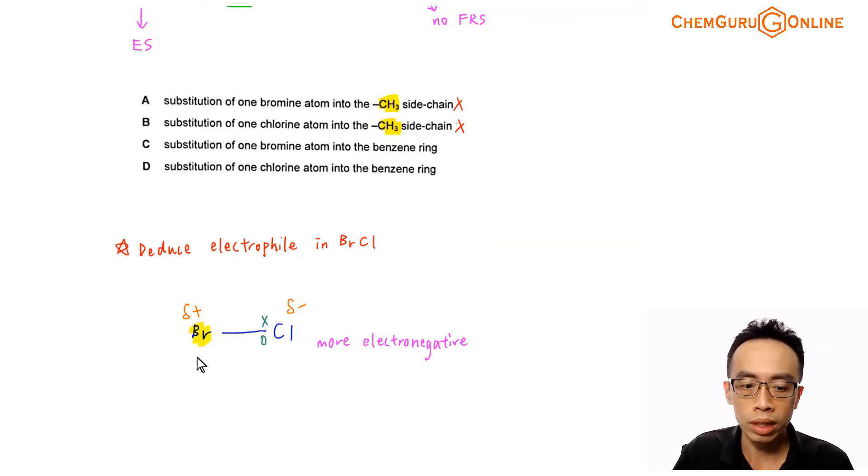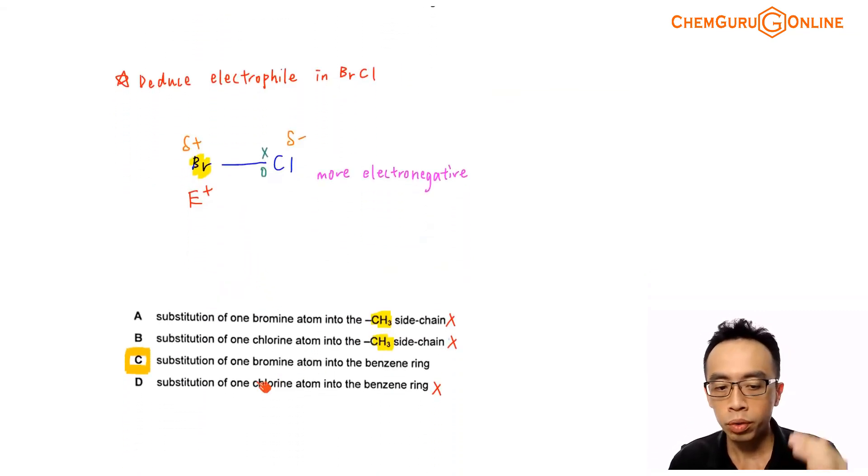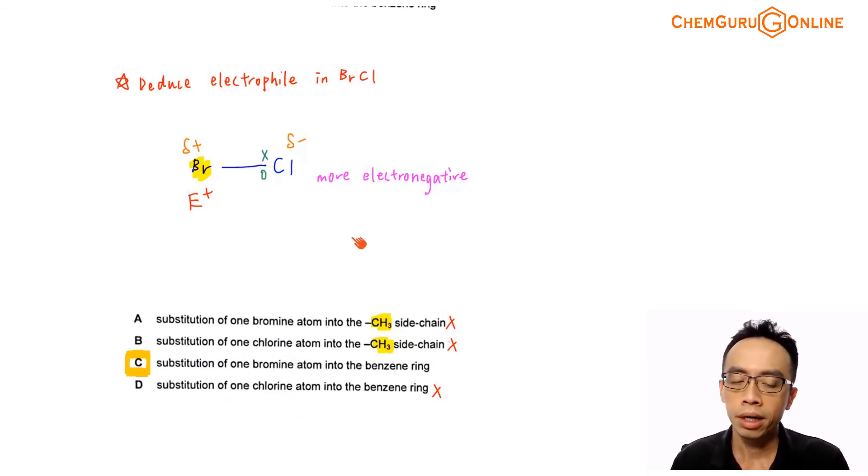So the substitution should be involving bromine substituting into benzene. So now we can run through the options between substitution of bromine atom into benzene versus substitution of chlorine atom into benzene. C will be a better answer. Now remember, involving bromine bonded to Cl,